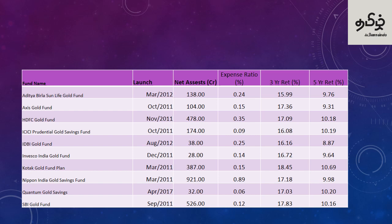Here is a list of gold mutual funds: Sun Life Gold Fund, Axis Gold Fund, STFC Gold Fund, ICICI Prudential Gold Savings Fund, IDBI Gold Fund, Invesco India Gold Fund, Kotak Gold Fund, Nippon India Gold Fund, Quantum Gold Savings, and SBI Gold Fund.